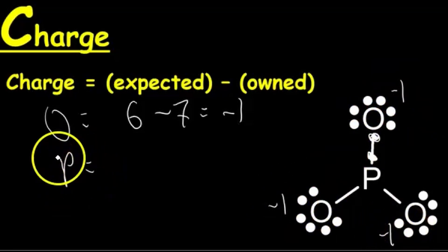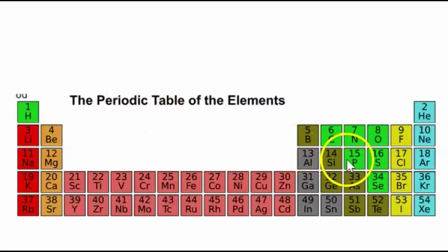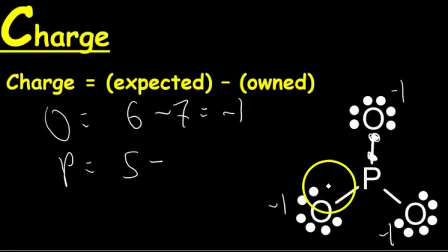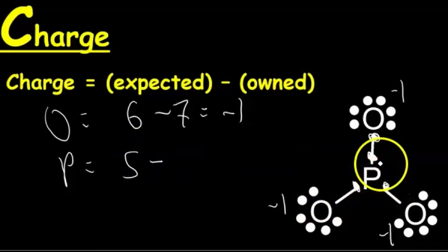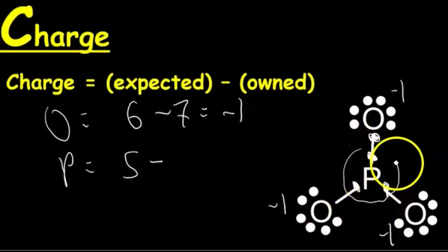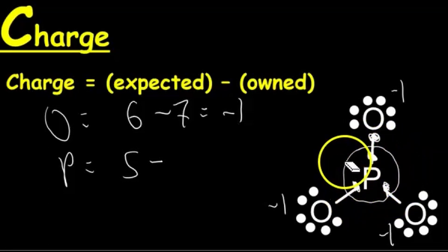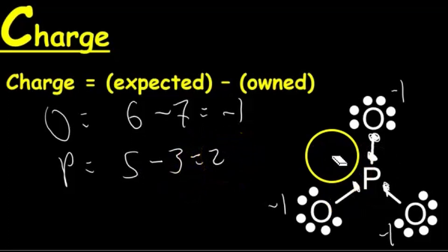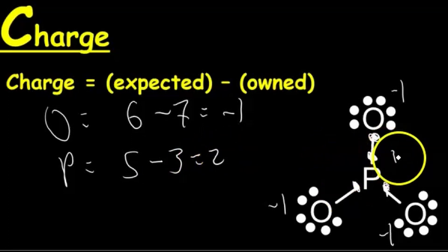For phosphorus, the charge is expected minus owned. On the periodic table, phosphorus has five expected valence electrons. However, phosphorus owns one electron from each bond — that's three owned electrons total. So five minus three equals two, and the charge on phosphorus is plus two.